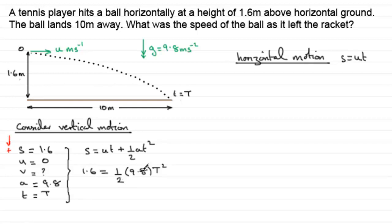So half of 9.8 is 4.9. If we rearrange this for t squared, we get t squared equals 1.6 divided by 4.9. And if we carry on and take the square root of this, we find that t equals 4 sevenths, t equals 4 sevenths of a second.